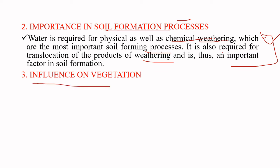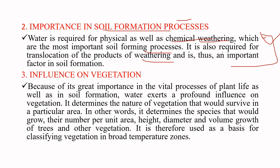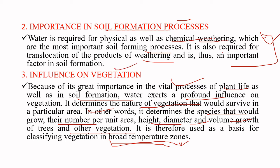Next is the influence of moisture on the vegetation. Because of the great importance of moisture in the vital processes of plant life as well as in soil formation, water exerts a profound influence on vegetation. It determines the nature of vegetation that would survive in a particular area — the species that would grow, their number per unit area, height, diameter, and volume growth. It is therefore used as a basis for classifying vegetation into broad temperature zones, and greatly influences the distribution of vegetation.